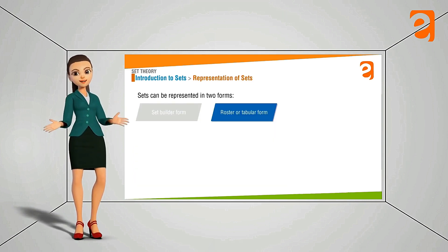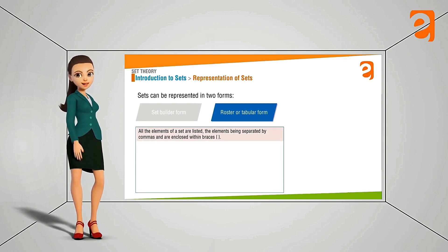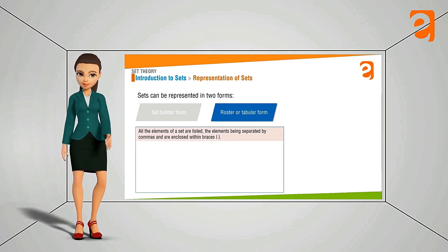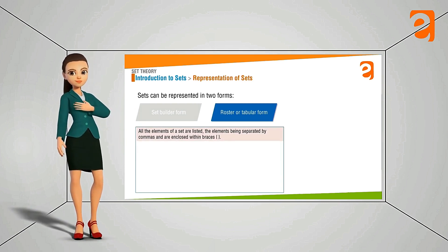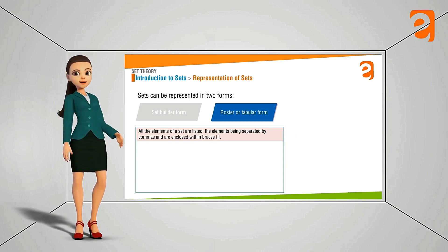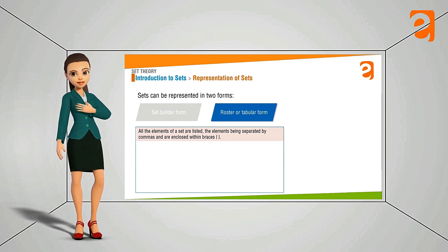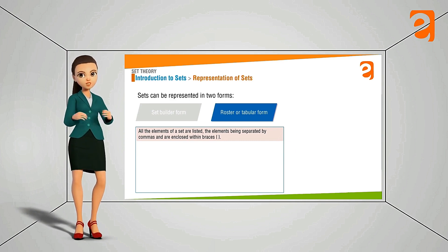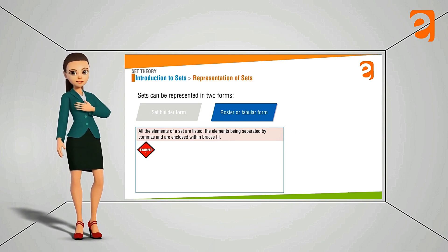Now let's define the roster or tabular form. It says that in this case all the elements of the sets are listed and they are separated by commas. Means that we are not writing that X such that X is possessing this property. Here we will specially mention that if it is the vowel we will write down A, E, I, O, U and we will put all those things in the bracket. Just have a look.